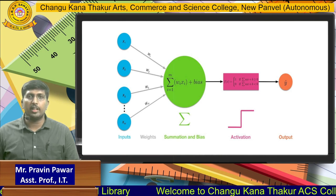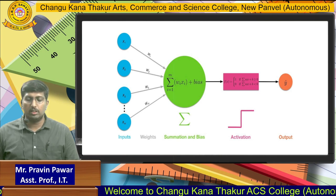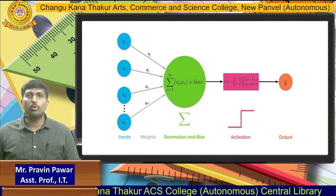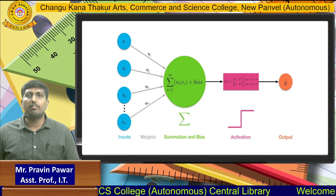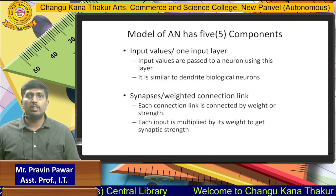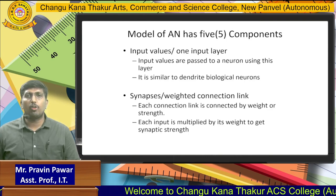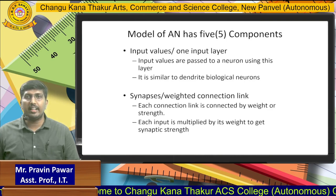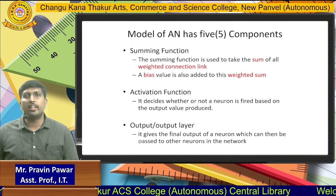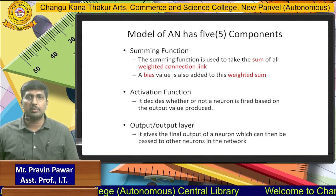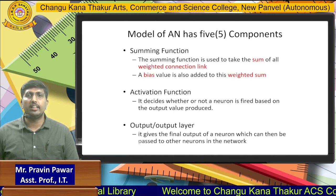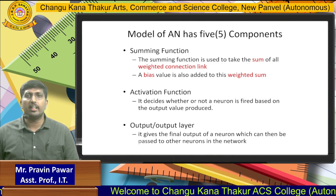In the model, X1 are the inputs and W are the weighted values. The middle processing part performs summation, and we use the activation function to determine the threshold and final output. The neural model has five components: input, synapse which is the weighted connection W, summation combining all inputs, activation function which decides whether to send the output or not, and finally the output layer generated after the activation function.